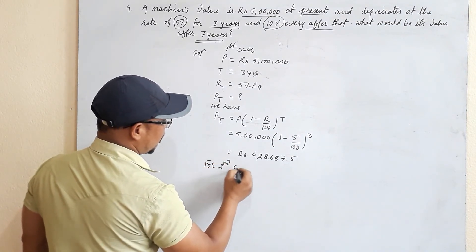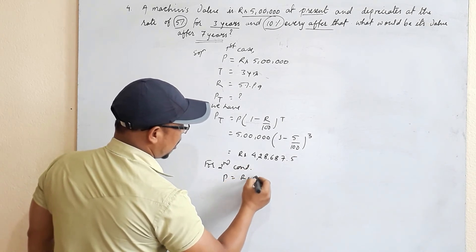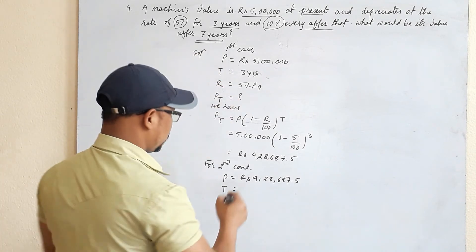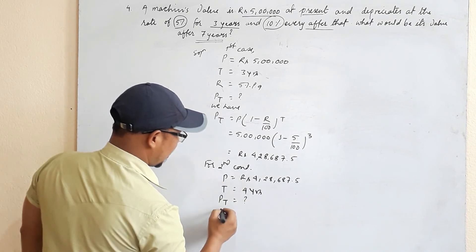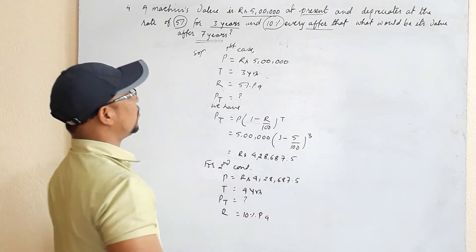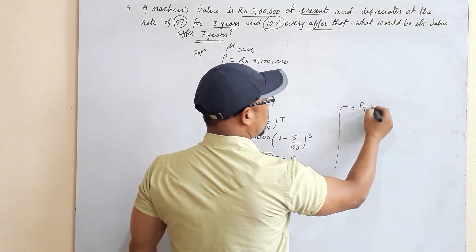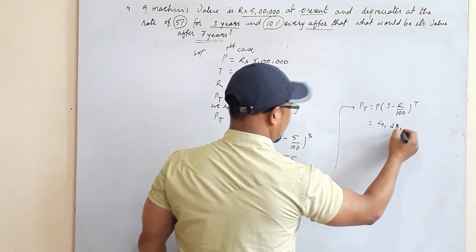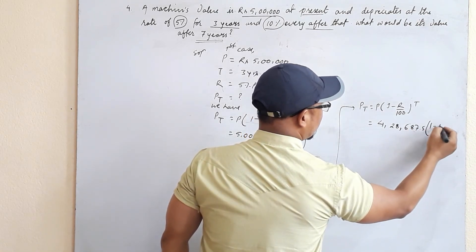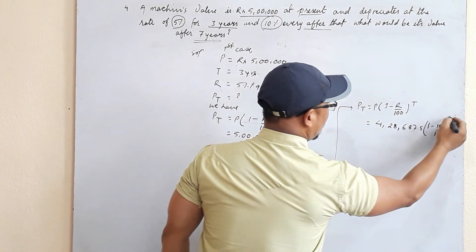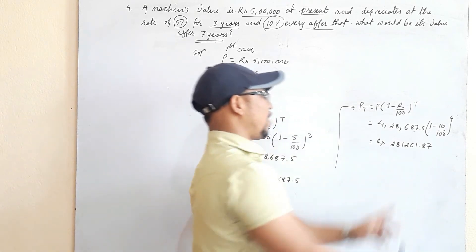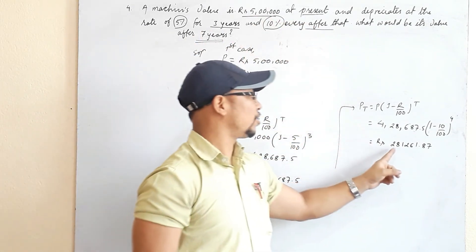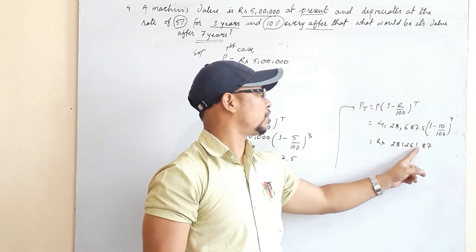Case 2: P = Rs 4,28,687.50, T = 4 years (since 7 − 3 = 4), r = 10% per annum. Using PT = P(1 − r/100)^T: PT = 4,28,687.50 × (1 − 10/100)^4. Calculating on a calculator gives a final value of Rs 2,81,261 (approximately). So the price of the machine after seven years is approximately Rs 2,81,261.